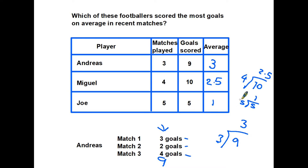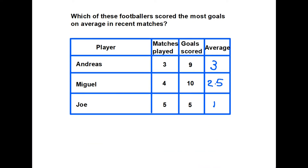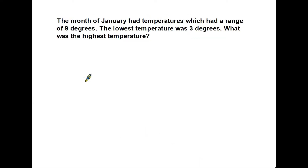Just to look at the range: if we had been asked the range of goals scored by these footballers, Miguel scored the most with ten goals and Joe is the lowest with five. So ten minus five equals five — the range of goals scored per player is simply five.